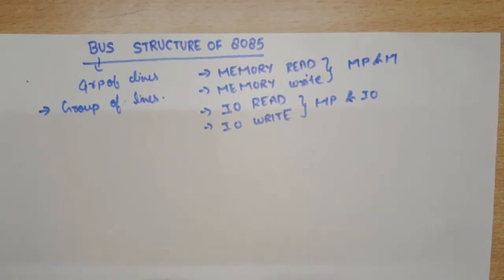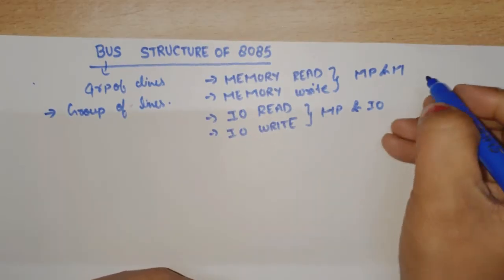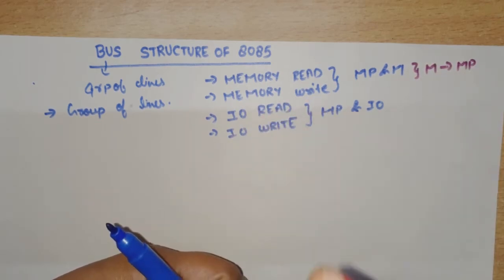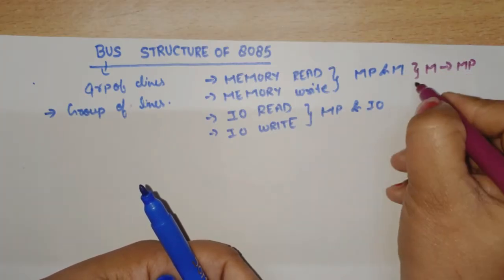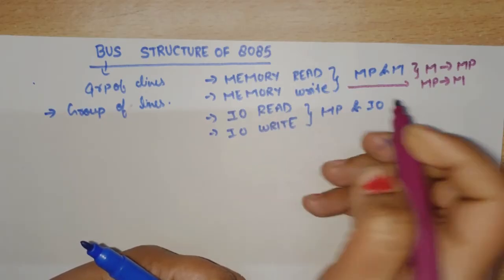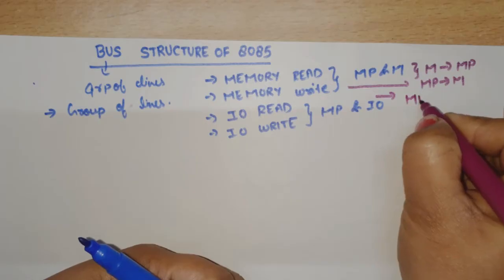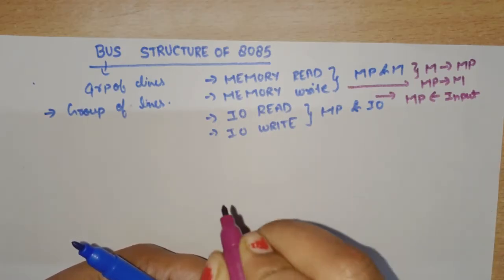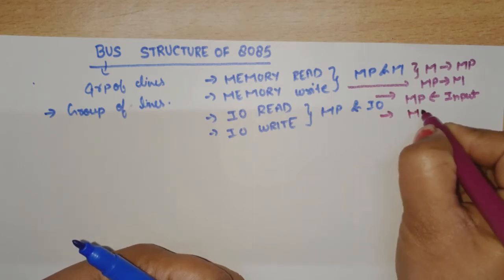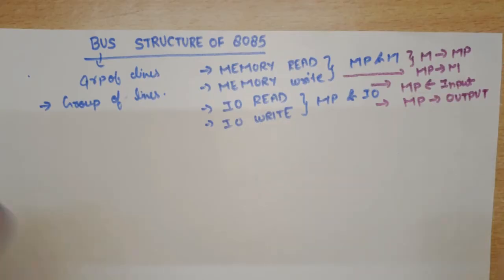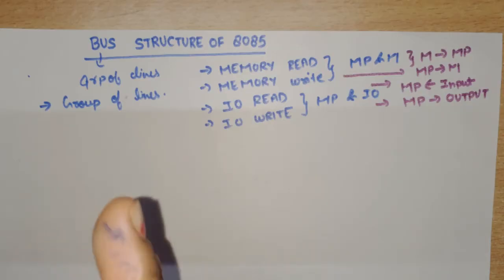When the microprocessor wants to read data, the data transfer goes from memory to microprocessor. When the processor wants to write on memory, data flows from the microprocessor to memory. When we perform a read operation, the microprocessor receives data from the input device. When we perform input/output write, the microprocessor sends data to the output device. All data is transferred through the buses.